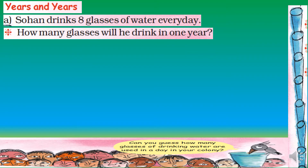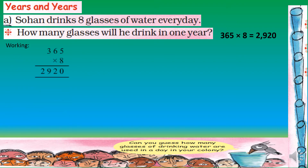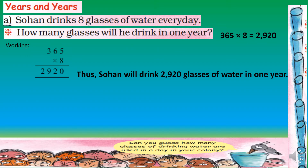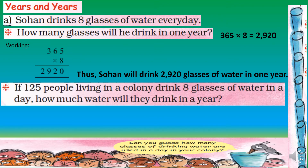How many glasses will he drink in one year? Since only one year is given with no specific type, we take 365 days. If a leap year were specified, we would use 366. So 365 multiplied by 8 equals 2920 glasses. Thus Sohan will drink 2920 glasses of water in one year.